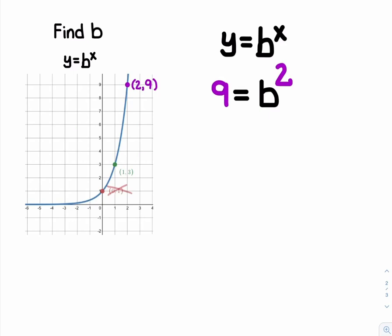Next, I'm going to solve this equation by getting b alone. To get b alone, I'm going to need to square root both sides.